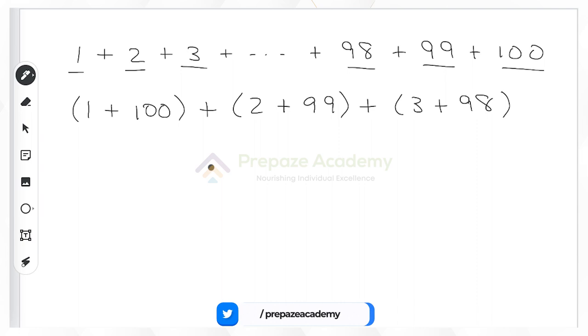Well, all the pairs of numbers added up to the same number, 101. So he did this 50 times.